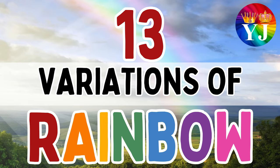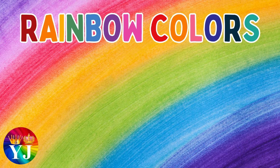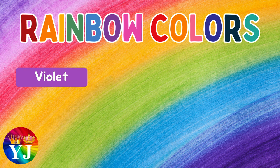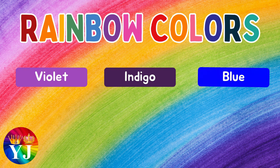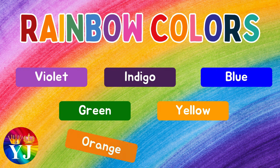13 variations of rainbow. The 7 rainbow colors: violet, indigo, blue, green, yellow, orange, red.